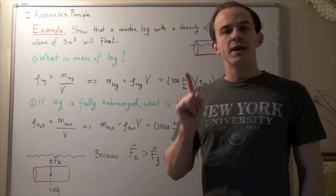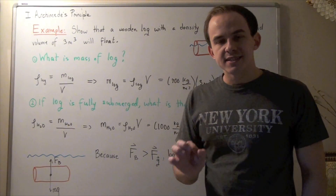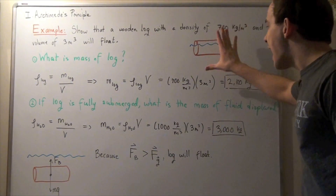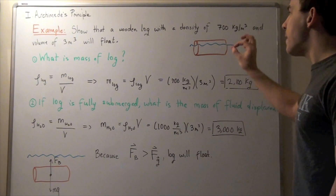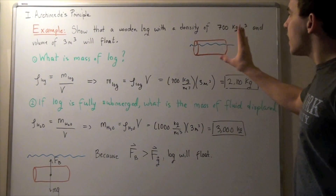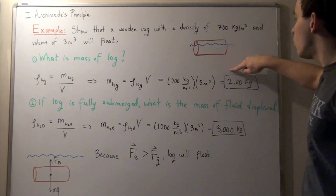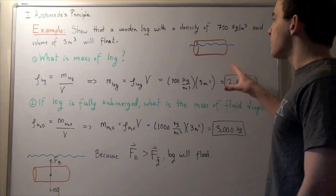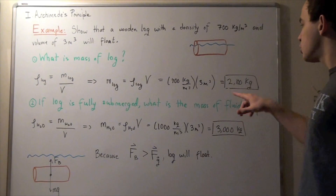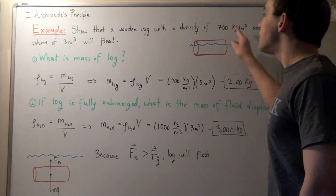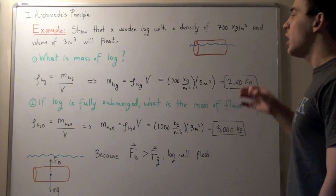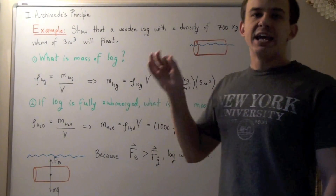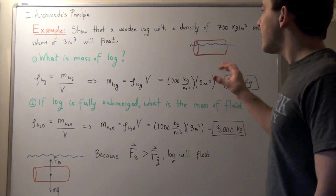One last important detail about floating objects: a floating object displaces an amount of fluid equal to its own weight. Since the mass of our object is 2100 kilograms, this floating object displaces a mass of fluid also equal to 2100 kilograms. To find the fraction of the object submerged, we take the density of the object, divide it by the density of the fluid, and multiply by the volume of the object — that gives us the volume submerged in the water.